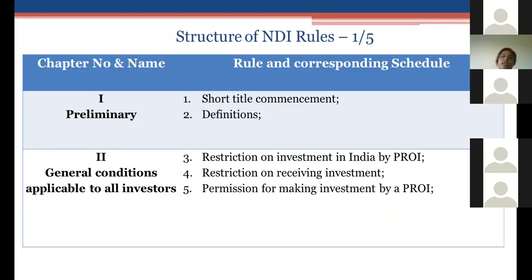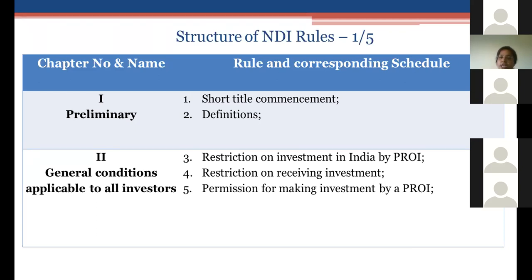The NDI Rules are divided into 33 rules and 10 schedules. Chapter 2 deals with general conditions applicable to all investors — Rules 3, 4, and 5 impose a general obligation on both the investing person and the entity receiving foreign investment to comply with NDI Rules.